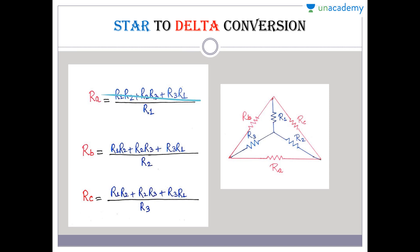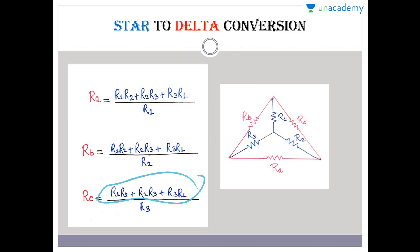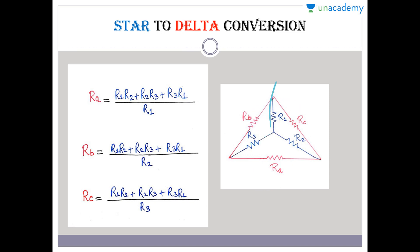This quantity — R1·R2 + R2·R3 + R3·R1 — is known as the equivalent resistance whenever you want to convert star into delta. You first find this equivalent resistance, which goes into the numerator. Then, to find R_A, whatever star branch is opposite to R_A goes into the denominator. The opposite branch of R_A in the star is R1, so we place R1 in the denominator.